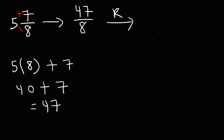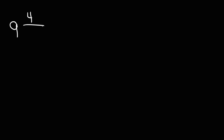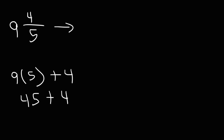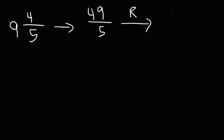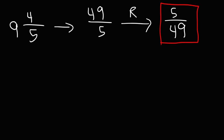Now let's find the reciprocal. Flipping the fraction, this becomes 8 over 47, and that is the answer. Here's one more example: 9 and 4 over 5 — find the reciprocal. Multiply 9 times 5 and add 4 to it. 9 times 5 is 45, and 45 plus 4 is 49. So this gives us 49 over 5 as an improper fraction. The reciprocal of 49 over 5 is 5 over 49.